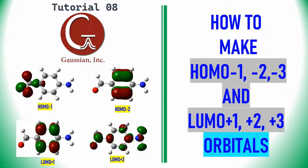Dear friends, this is my tutorial 8. In this video I'm going to tell you how to make HOMO-1, HOMO-2, HOMO-3, and also LUMO+1, LUMO+2, LUMO+3 orbitals. In an earlier video I told you only about the frontier molecular orbitals, that is HOMO and LUMO only. You can also make HOMO-1, HOMO-2 and LUMO+1, LUMO+2 orbitals. I have already created the HOMO-1, HOMO-2, LUMO+1, and LUMO+2 orbitals.